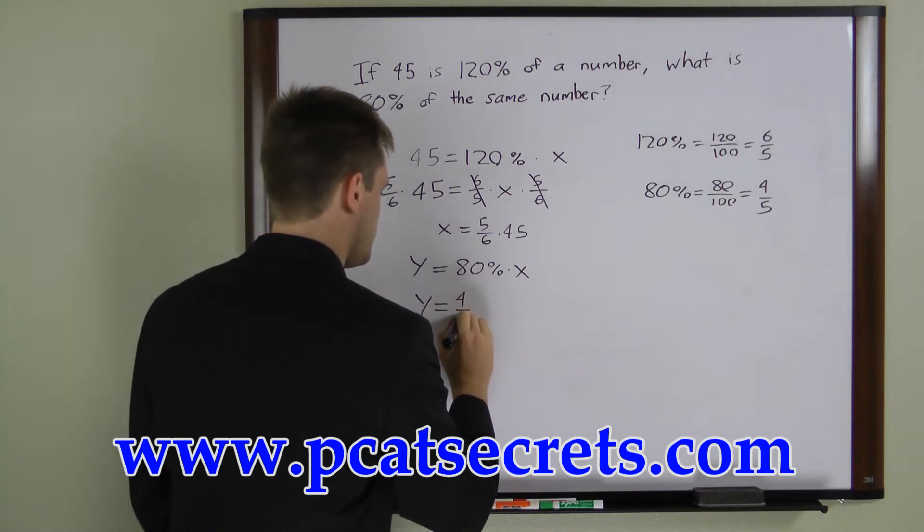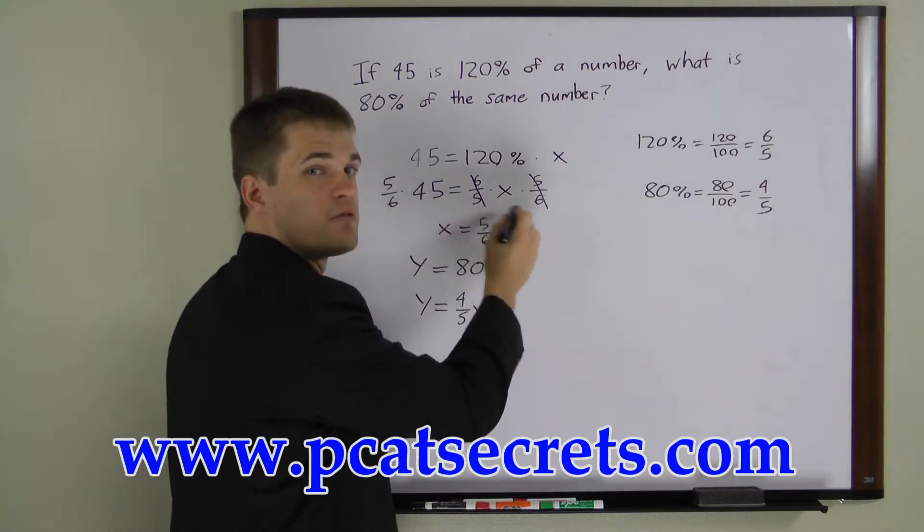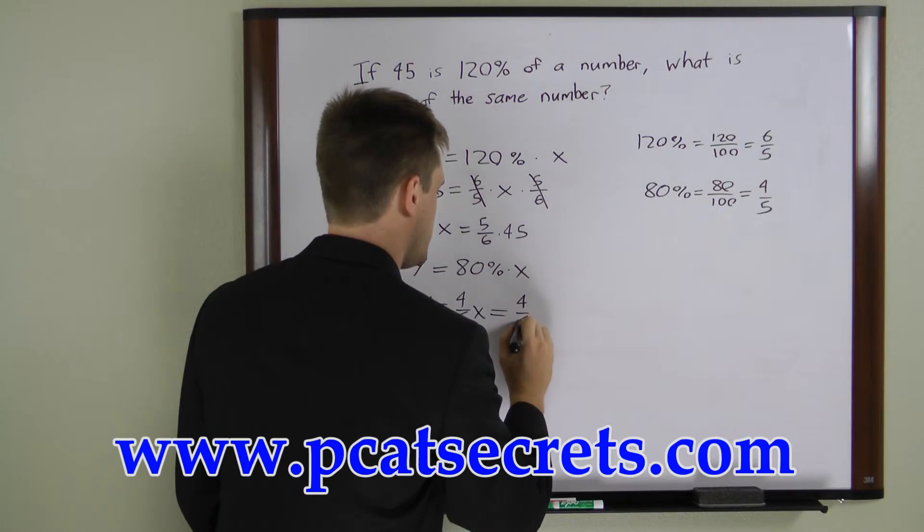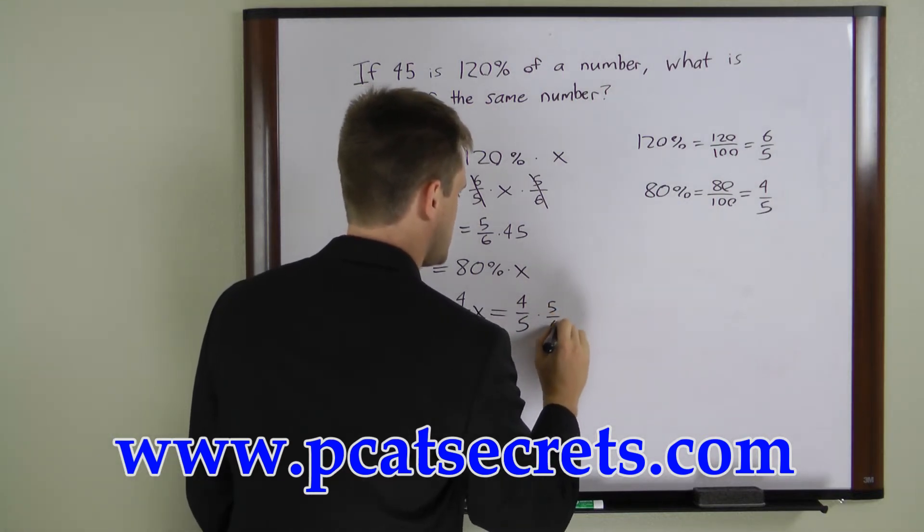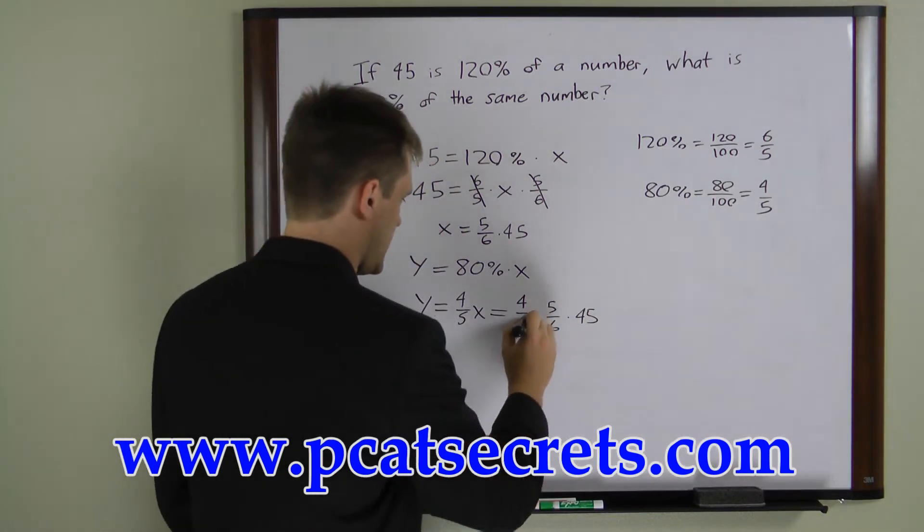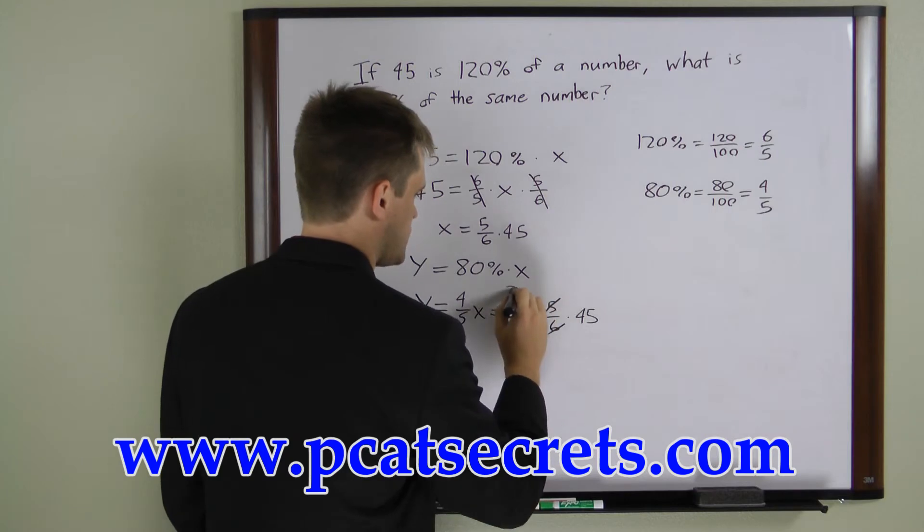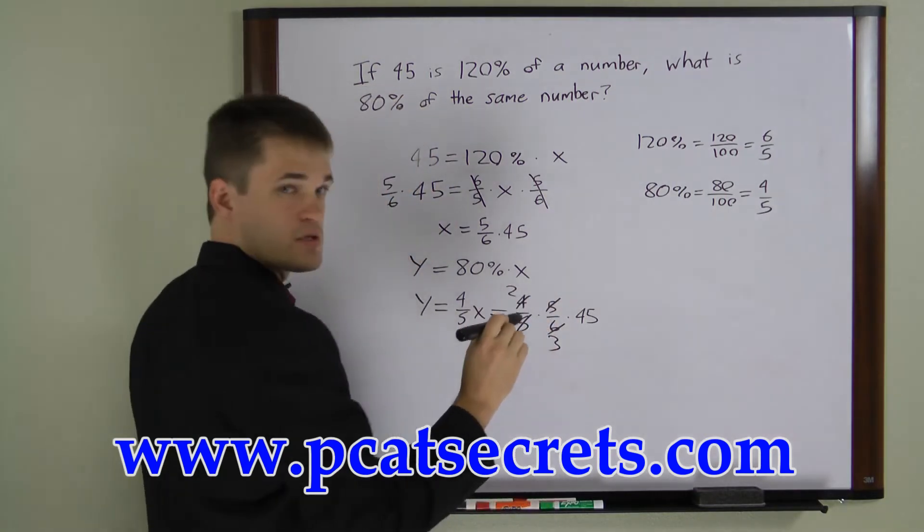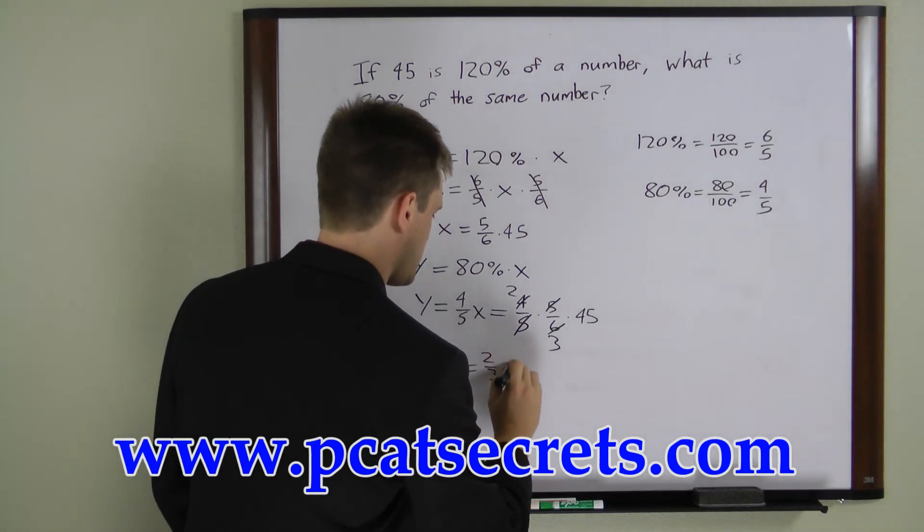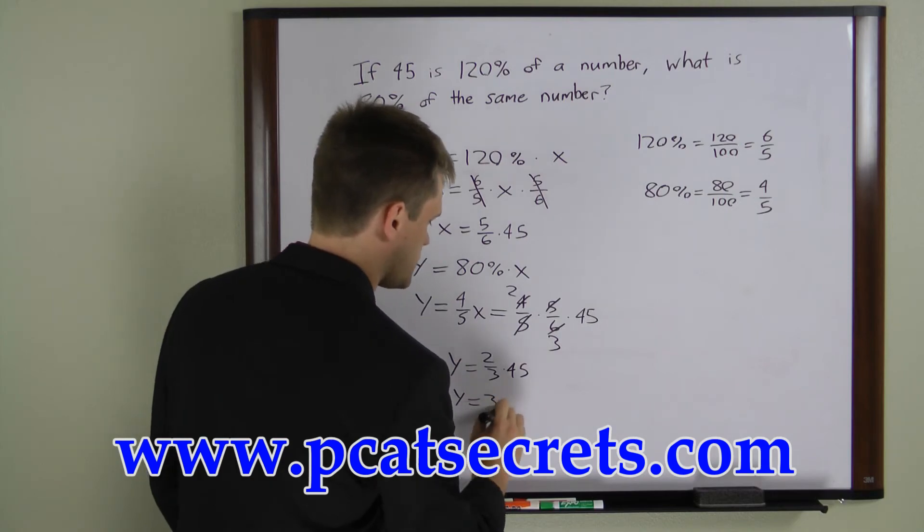y equals 4 fifths times 5 sixths times 45. Now we can cancel out these 5's and the 4 over 6 is the same as 2 over 3. So we can rewrite this as y equals 2 thirds times 45 which is the same as y equals 30.